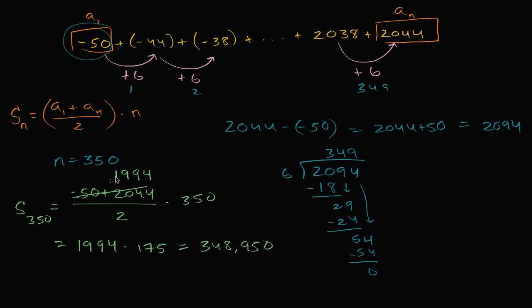And we could express this in sigma notation now, now that we know what the n is. And we found our answer, this is what we were looking for. But just in case you're curious, we could write this as a sum from k equals 1 to k equals 350 of negative 50 plus 6 times k minus 1.